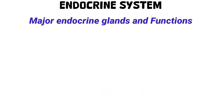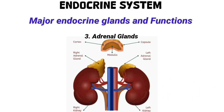Number three: the adrenal glands. Each adrenal gland sits on top of a kidney and has two regions. The adrenal cortex, which is the outer layer, produces steroid hormones known as corticosteroids. The adrenal medulla, which is the inner layer, produces catecholamines, which are norepinephrine and epinephrine. These are released during stress in the fight-or-flight response, increasing heart rate, blood glucose, and blood flow to the muscles.